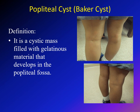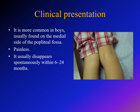Here we are seeing a child from the posterior aspect. You can see on the right side — this is the posterior part of the right knee — there is a cystic swelling compared to the normal side. You can see the bulge here. So a Baker cyst or popliteal cyst is a cyst filled with gelatinous material that develops in the popliteal fossa, the posterior part of the knee.